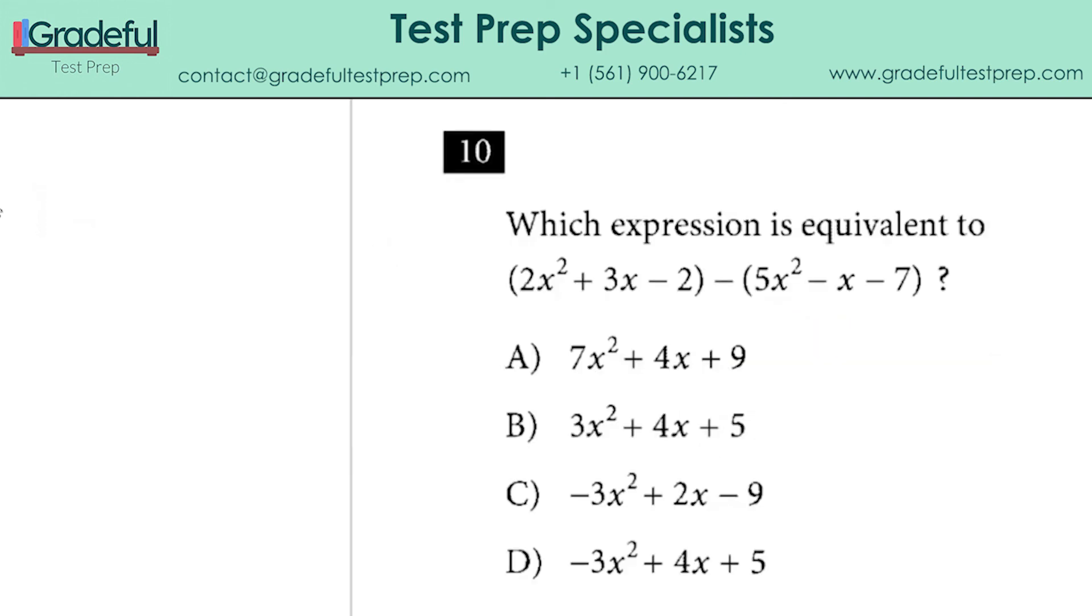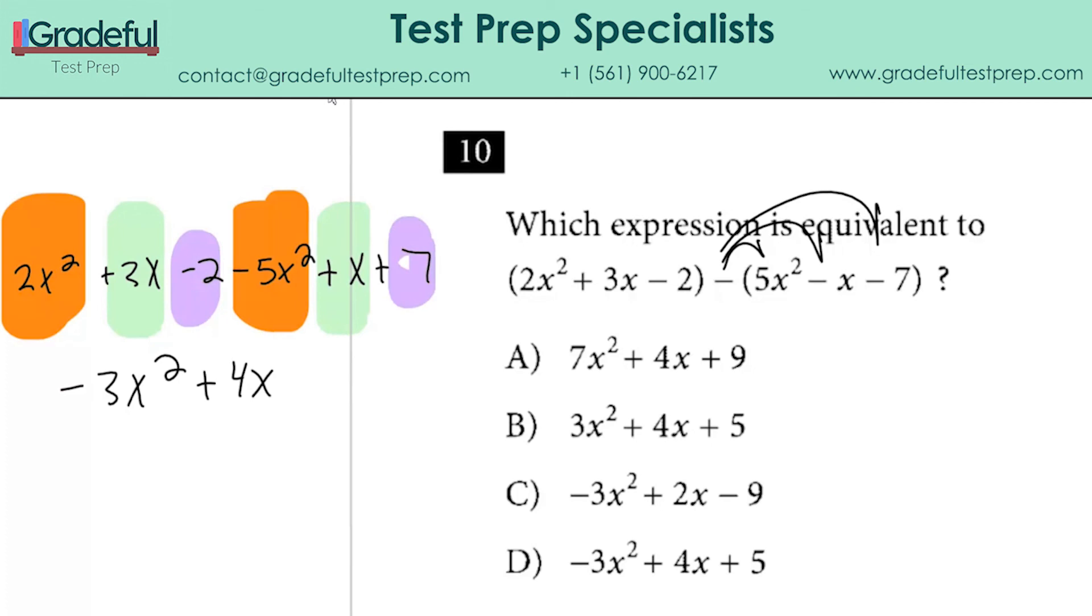On question 10, the first thing we're going to do is distribute this negative sign. That negative sign is like a negative 1, so we have 2x squared plus 3x minus 2 minus 5x squared plus x plus 7. Let's combine our like terms. Here we have 2x squared and negative 5x squared, so that's negative 3x squared. Here we have 3x and x, so that's 4x. And last we have negative 2 and 7, which is 5. That's negative 3x squared plus 4x plus 5, which is answer choice D for number 10.